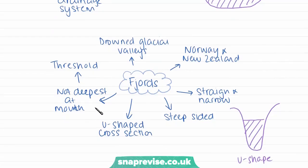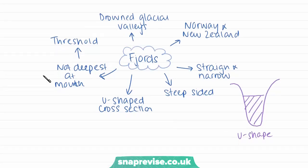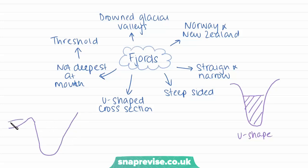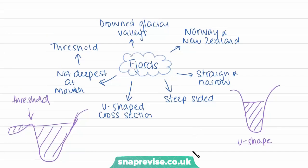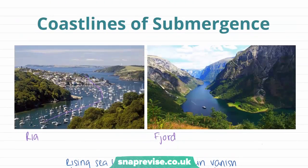Fjords are not actually deepest at their mouth where they reach the sea, because they have what's called a threshold, which formed when the glacier stopped. The long-section of a fjord shows a small threshold at the mouth before it then gets deeper inland. This is an important feature to know because you may be asked to draw the cross-section or long profile of a ría or fjord in an exam. This photograph shows a fjord with much steeper sides — a former glacial valley that has been flooded as sea levels rose.